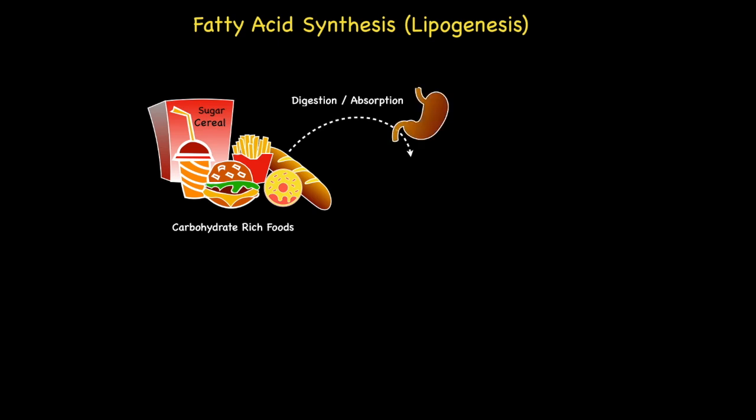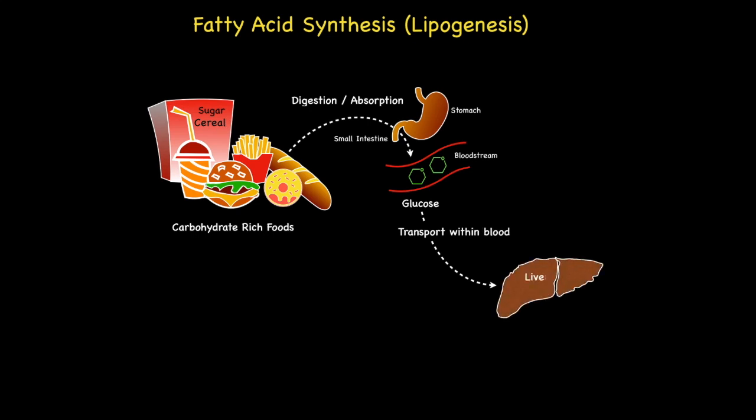Once consumed, these foods are broken down by the process of digestion, a majority of which occurs in the small intestine to release glucose, which is subsequently absorbed into the bloodstream and transported to the liver.